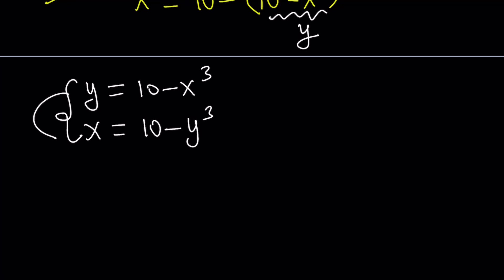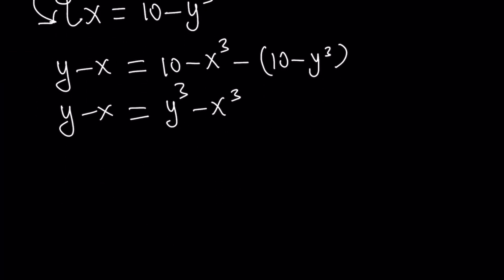So let's go ahead and subtract these equations. Y minus x equals 10 minus x cubed minus 10 minus y cubed. Y minus x equals, 10 cancels out, we end up with negative x cubed plus y cubed or y cubed minus x cubed. Now, y cubed minus x cubed is factorable by difference of two cubes. Right? Let's go ahead and do it. Y minus x times y squared plus yx plus x squared.